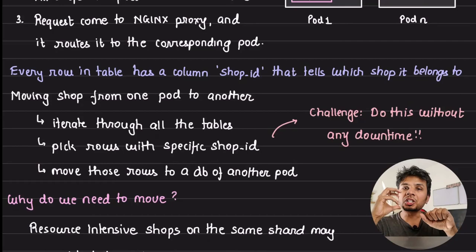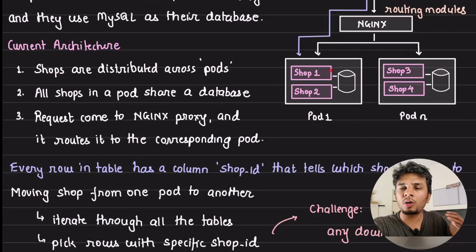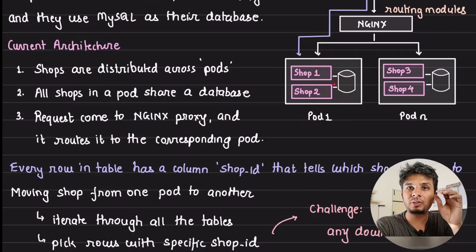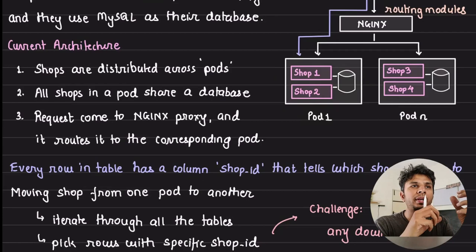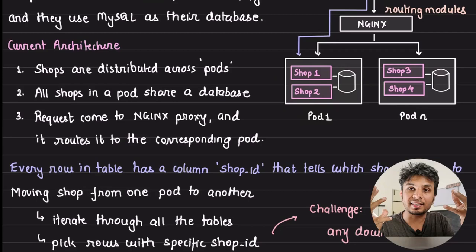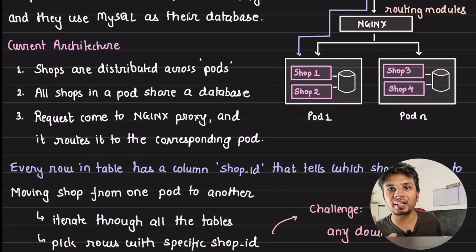When a shard becomes hot — say, shop 1 has a huge load — pod 1 becomes hot, and the database shared between shop 1 and shop 2 gets overwhelmed with reads and writes. One hot shop can affect hundreds of shops hosted on the same pod. Moving API servers is easy since they're stateless. But what's stateful is the data — moving data from one database to another without downtime is what makes this extremely challenging.